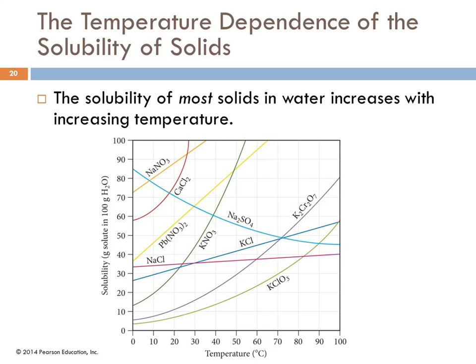Sodium sulfate — as you increase the temperature, the solubility of it goes down. Why? That's a good question; I do not know the answer to that. It's called retrograde solubility. There are other substances that do this as well, but generally, solubility of a solid increases with temperature.